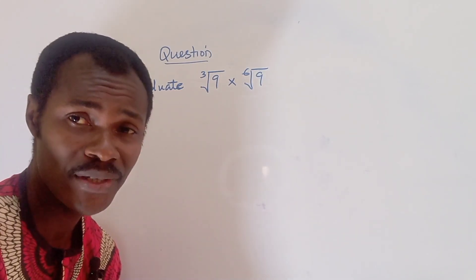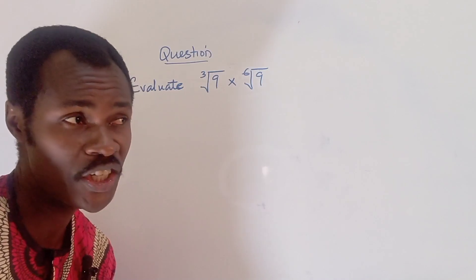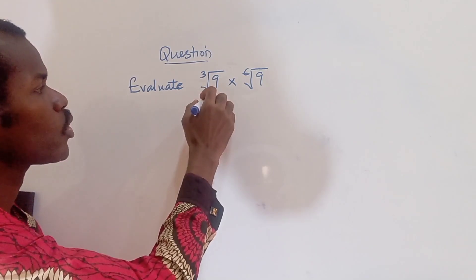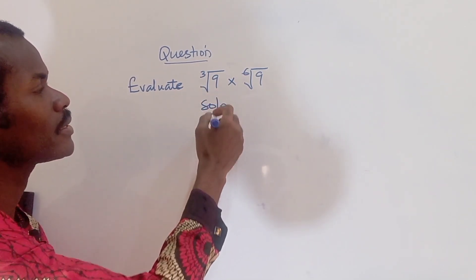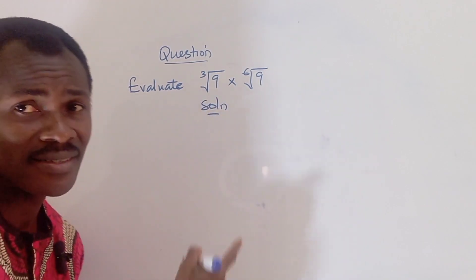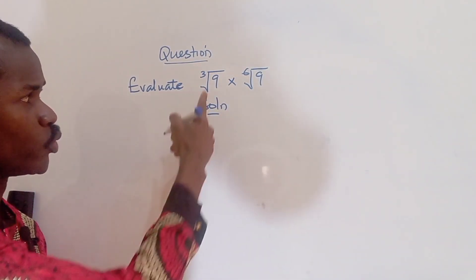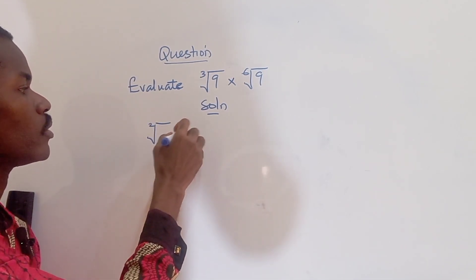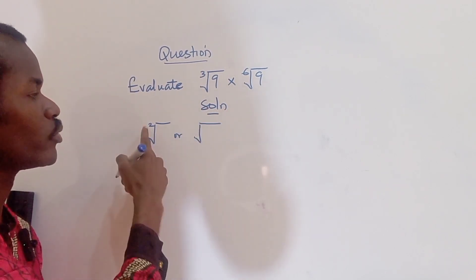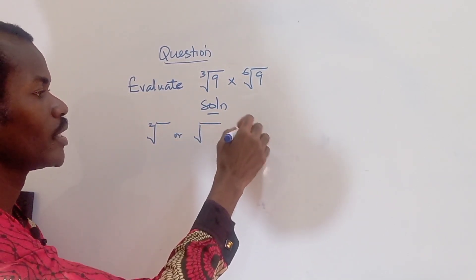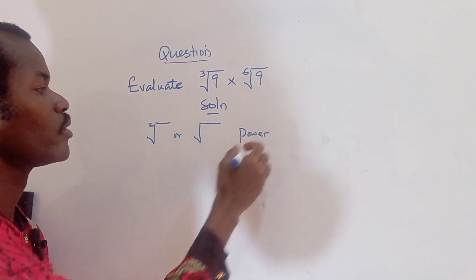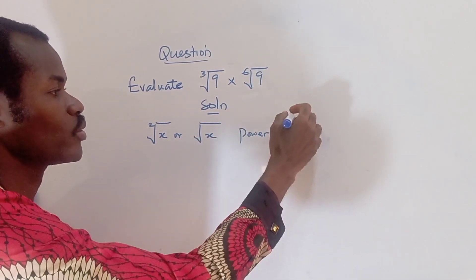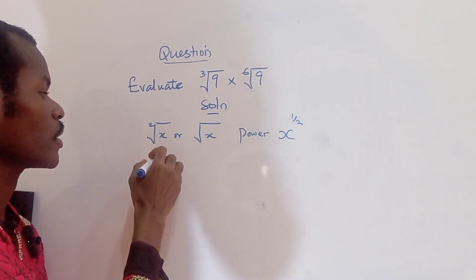Let's quickly apply the principles of indices and exponentials to solve this problem. The first thing to understand is the radical signs — the root signs. Remember, we can write a root as a fractional power. If I have x under a root sign, I can write that as x raised to the power of 1/r.